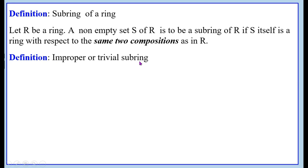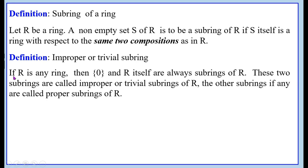Improper or trivial sub-ring. If R is any ring, then the identity element 0 with respect to addition and R itself are always sub-rings of R. These two sub-rings are called improper or trivial sub-rings of R. The other sub-rings, if any, are called proper sub-rings of R.